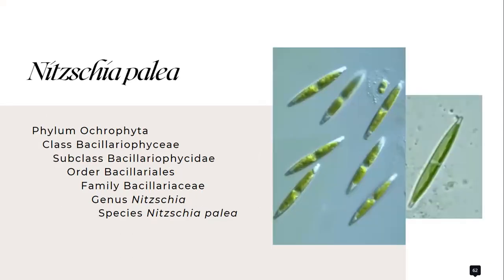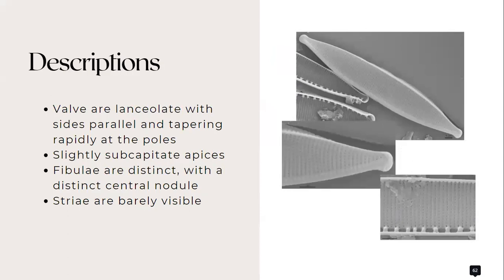And we also have Nitzschia palea which also belongs to the family Bacillariaceae. Its valves are lanceolate with sides parallel and tapering rapidly at the poles. It has slightly subcapitate apices. Its fibulae are distinct with a distinct central nodule. And the striae are barely visible.